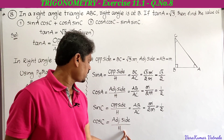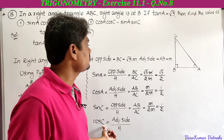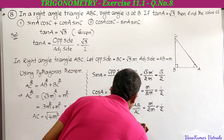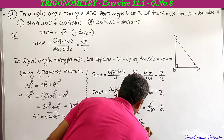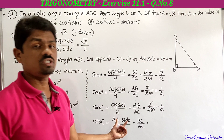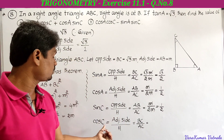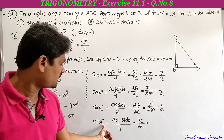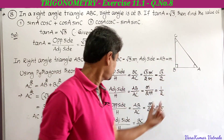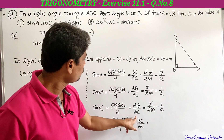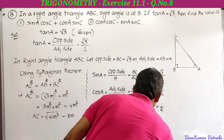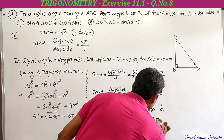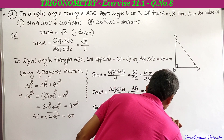Cos C equals adjacent side to angle C divided by hypotenuse. Adjacent side to angle C is BC and hypotenuse is AC. It is very important to observe which angle we are working with when selecting opposite and adjacent sides. So cos C equals BC by AC, which is root 3M by 2M. The M's cancel giving cos C equal to root 3 by 2.